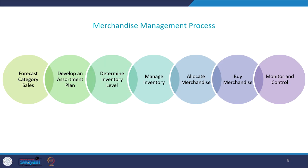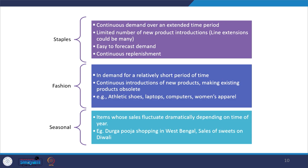Now we will look at the merchandise management process. It starts with forecasting category sales, then developing an assortment plan, determining inventory levels, managing inventory, allocating merchandise to different stores, buying merchandise, and finally monitoring and control. To understand the forecasting process, you need to understand staple, fashion, and seasonal merchandise.